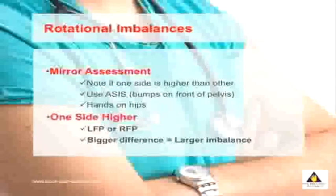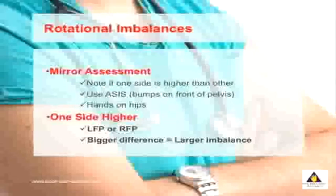If your left side is higher, you have what's called an LFP, and if your right side is higher, you have an RFP. The bigger the height change, the bigger the imbalance occurring in your spine.